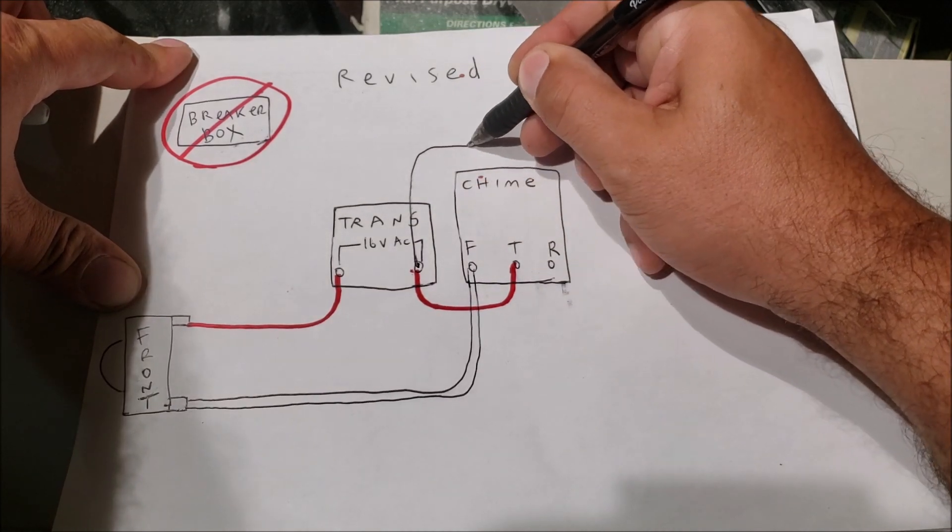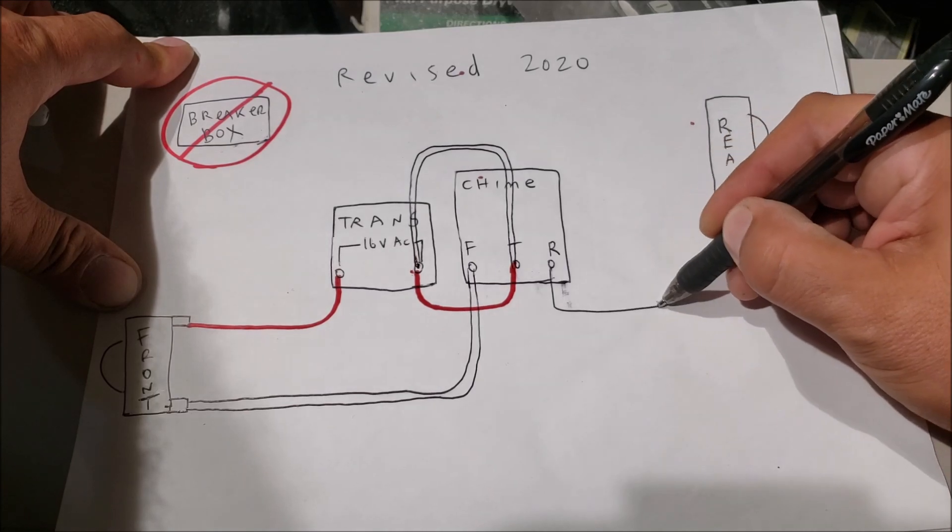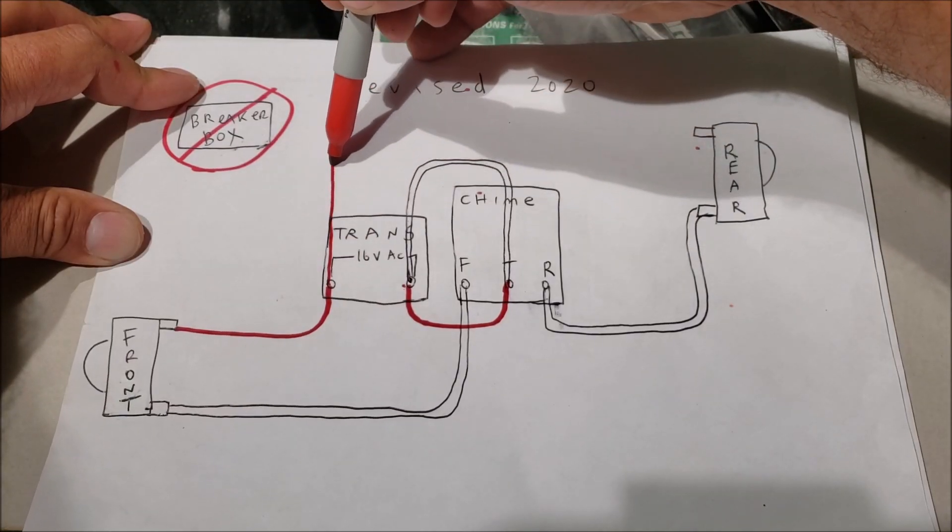We're going to take the white off the transformer and run it just like that. Then the other piece of white goes over to our switch. Then we come off the other side of the transformer. Remember if you have electronic doorbells to put your diodes in.